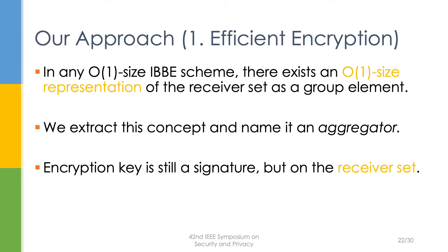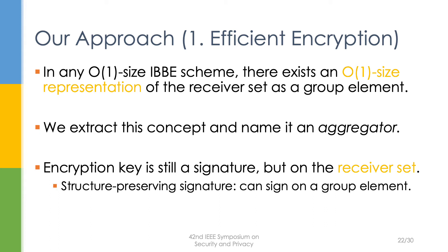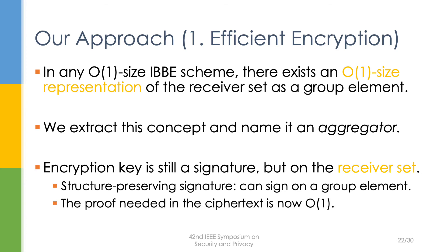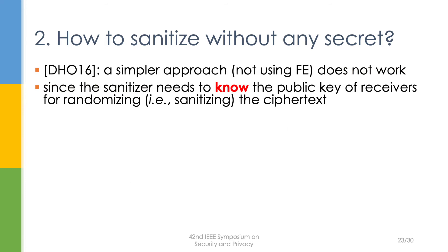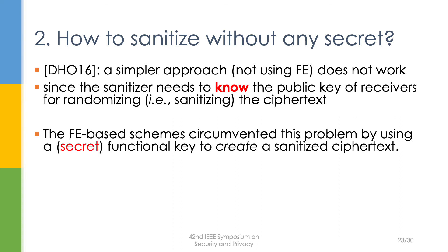In our construction, an aggregator key is still a signature, but now it signs on the recipient set. For this, we need to use structure-preserving signatures since they can sign on group elements. This also makes the proof in the ciphertext constant size. The next question is how do we sanitise without using any secrets? The seminal work already noted that a simple approach not using FE but using a proof of knowledge does not work, because the sanitiser in that case needs to know the public key of the receiver for randomizing the ciphertext.